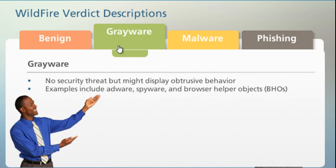The Wildfire grayware verdict was introduced in PanOS 7.0 to clearly identify executables that behave similarly to malware but are not malicious in nature or intent. The verdict enables a security incident responder to quickly distinguish grayware from malicious files and to prioritize accordingly. Though antivirus signatures are not generated for grayware, you can configure your firewall to log grayware events to assess if such events warrant further action.